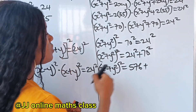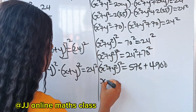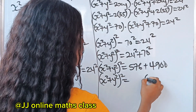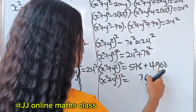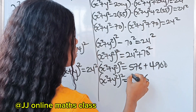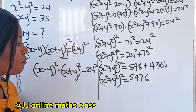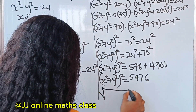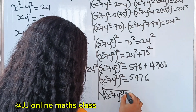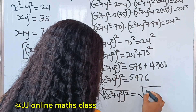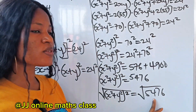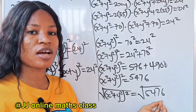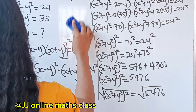So x squared plus y squared, all squared, equals 576 plus 4900. Adding: 576 plus 4900 gives us 5476. Now to get x squared plus y squared, let's take the square root of both sides: x squared plus y squared equals square root of 5476. I'll use a trick to find this square root without a calculator.